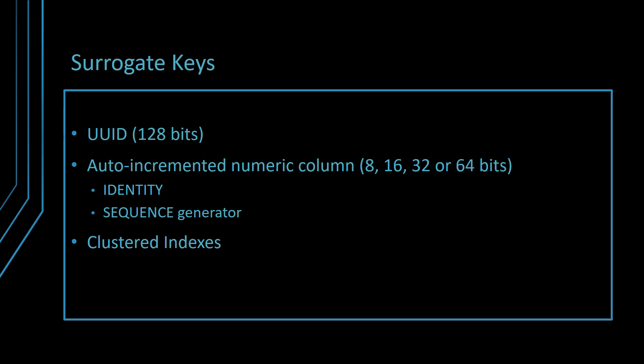In MySQL, secondary indexes reference the primary key. So if the primary key is large, all secondary indexes will be affected as well. Numeric identifiers are more suitable for clustered indexes as well. A clustered index is an index-organized table, meaning that the table itself is stored as an index, where the primary key is used to build the index.